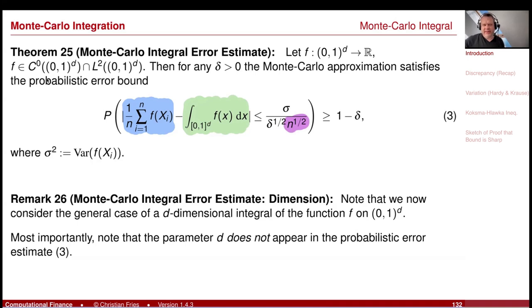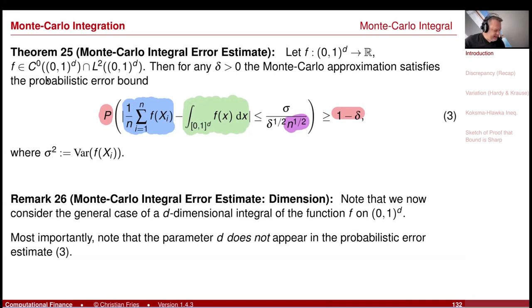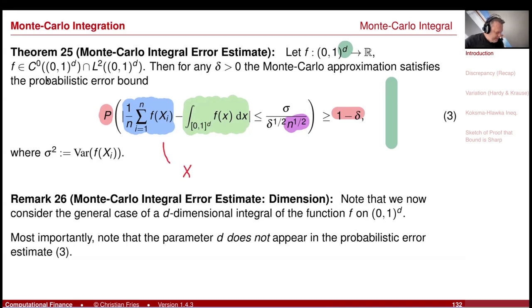Not too good — we saw classical integration rules with far better convergence rates. A further defect is that convergence only holds in probability, since we have a sequence of IID random variables. We applied this method using a single event omega. We don't know a lot about our approximation accuracy, but remarkably, the dimension of the function does not enter the estimate, so Monte Carlo really has an advantage in higher dimensions.